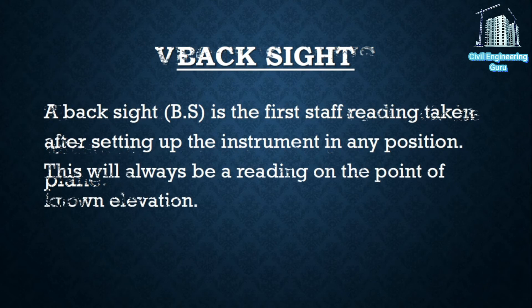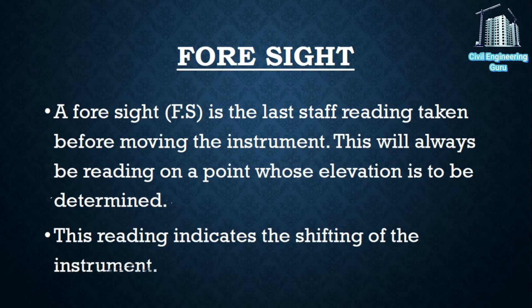Back sight: a back sight is the first staff reading taken after setting up the instrument in any position; this will always be a reading on a point of known elevation. Foresight: a foresight is the last staff reading taken before moving the instrument; this will always be a reading on a point whose elevation is to be determined, and this reading indicates the shifting of the instrument.